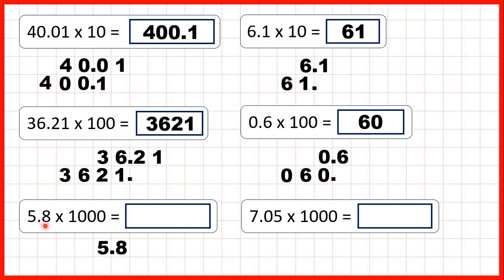Now we have 5.8, so we write the number out and copy down the decimal point. And this time we are multiplying by 1000. Now multiplying by 1000 is like multiplying by 10 and then by 10 again, and then by 10 for a third time. That's why to multiply by 1000 we need to move our digits 3 squares to the left. So we copy down this 5, 3 squares to the left, and do the same with this 8. We now have 2 empty squares before our decimal point, so we need to write zeros in these empty squares to show that the 5 has now moved to the thousands column and the 8 to the hundreds.